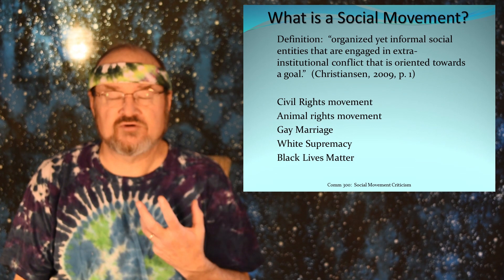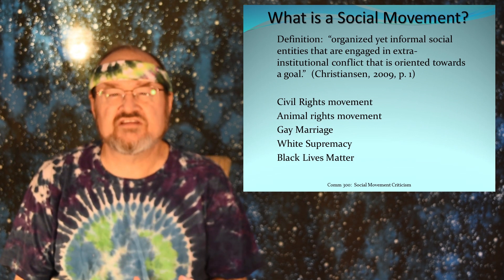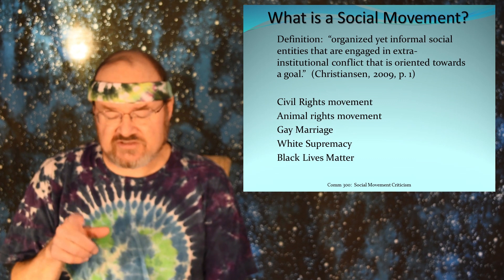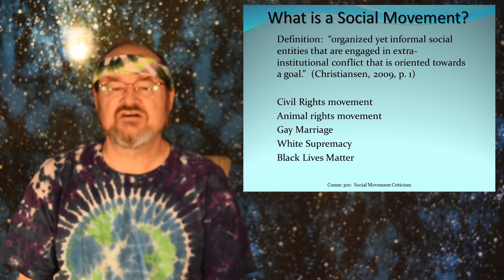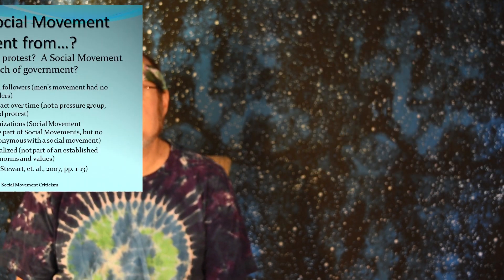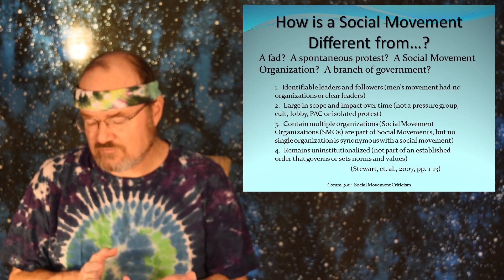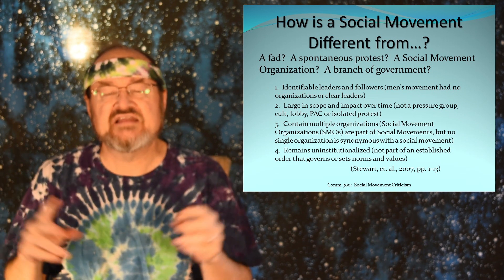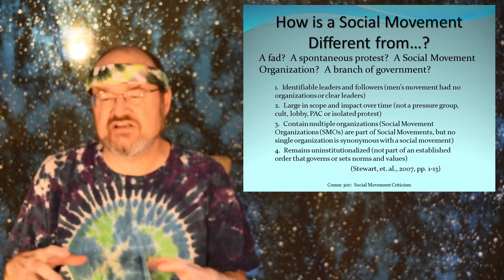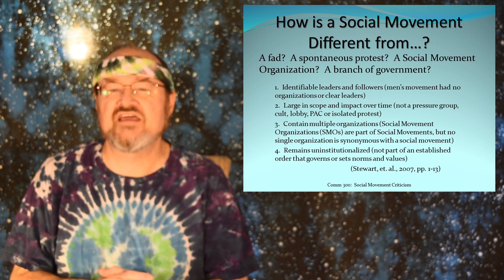Various examples include some that we're relatively familiar with — the civil rights movement, the animal rights movement — and some that are more recent, like Black Lives Matter. The question becomes how do we distinguish between a social movement and a fad, a spontaneous protest, or even a branch of government? Stuart et al. talk about this and say that a social movement has clearly identifiable leaders or followers. Something like the men's movement fails this test because it doesn't really have a clear identifiable set of leaders, clear followers, or organizations that make up that movement. So it's not clear that the men's movement is a social movement.